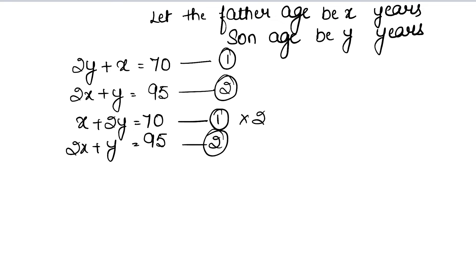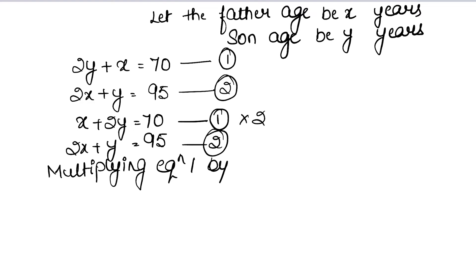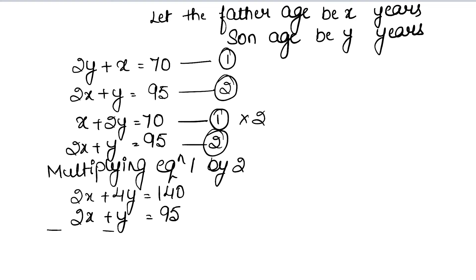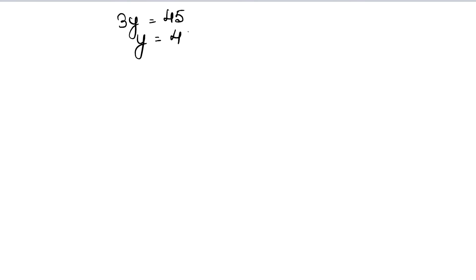We multiply equation 1 by 2, giving us 2x + 4y = 140. The second equation remains as it is: 2x + y = 95. Since both have 2x (same sign), we subtract — the signs change. Subtracting gives us 3y = 45.